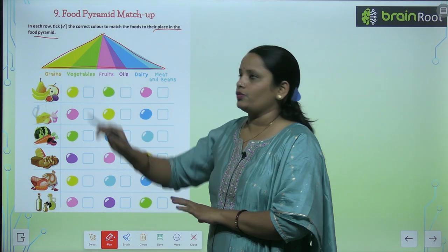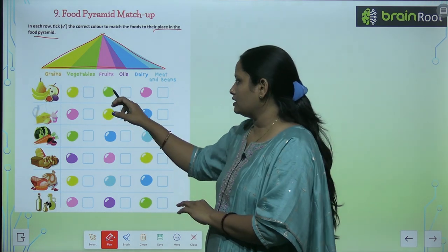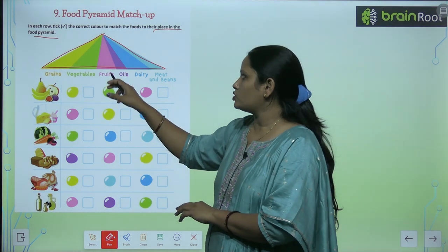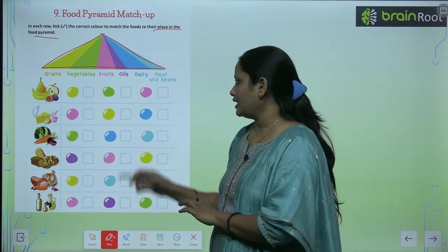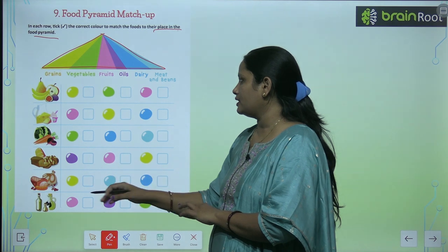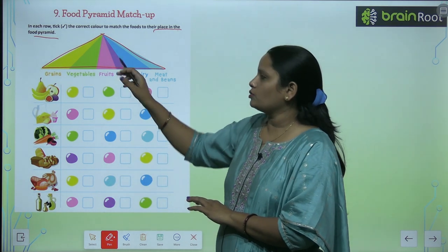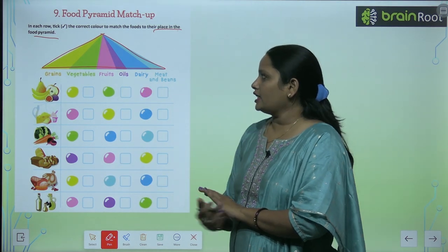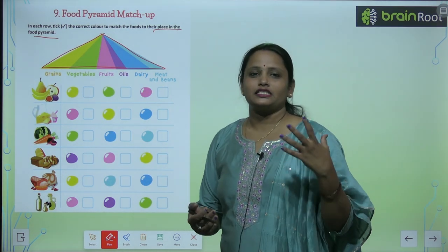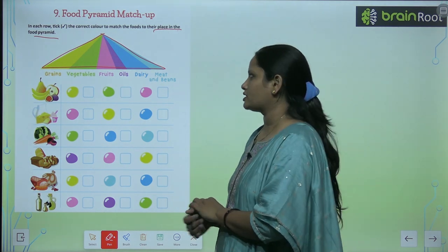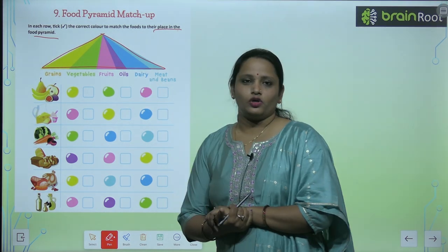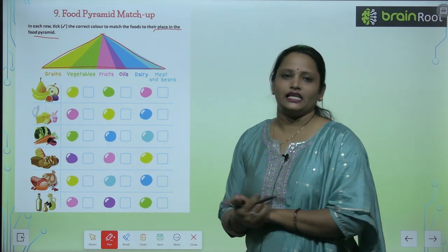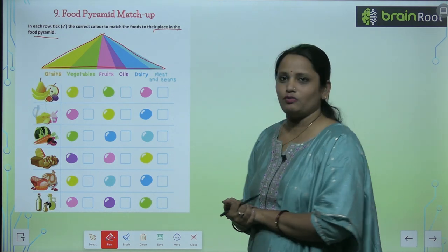Green color is for Vegetables. Here is green. Fruits are also shown. Pink color is for another group. Oils are purple. Dairy is dark blue — dairy means milk and dairy products. Meat and beans are light blue, a sky blue color.